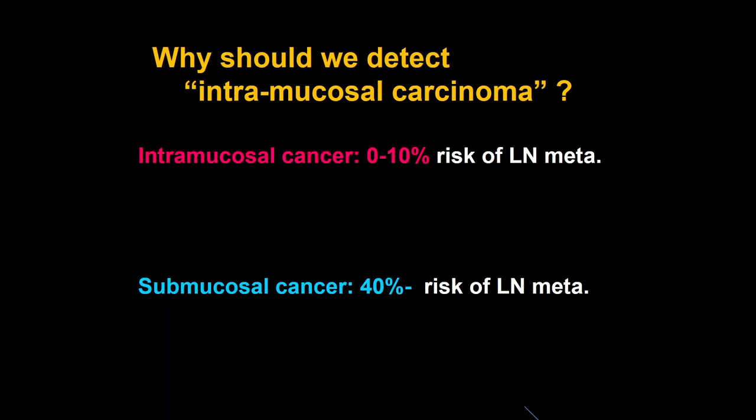Why should we detect intramucosal cancer in the endoscopic examination? The answer is very simple: intramucosal cancer has a very low risk of lymph node metastasis. Once cancer invades into the submucosal layer, there is a 40% or more risk of lymph node metastasis in the esophagus, and the treatment option is totally different. For intramucosal cancer, we can resect the region via EMR or ESD. But once cancer invades to the submucosal layer, we need surgery and concurrent chemoradiotherapy.